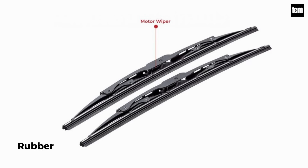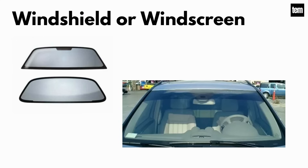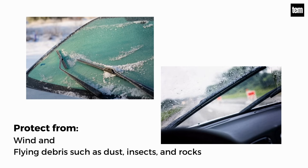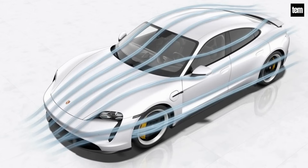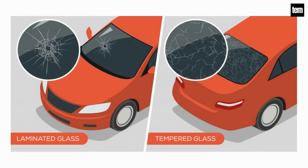That's why it's important to replace wiper blades every 6 to 12 months. Windshield or windscreen. The windshield is the front window of a vehicle, which provides visibility for the driver. It protects vehicle occupants from wind and flying debris such as dust, insects, and rocks, and provides an aerodynamically formed window towards the front. Generally, a windshield is made from laminated glass or tempered glass.